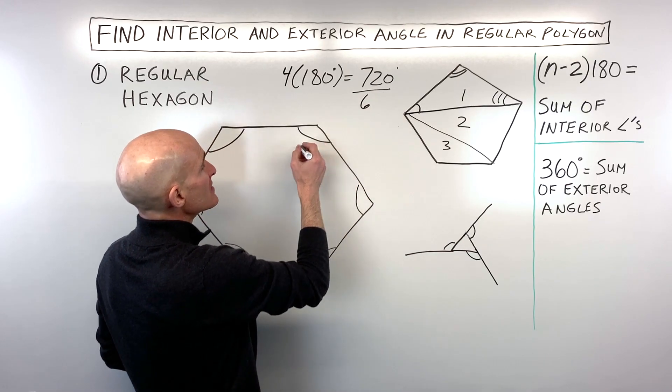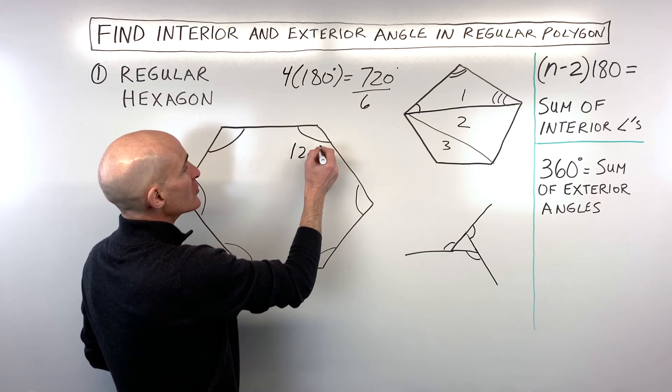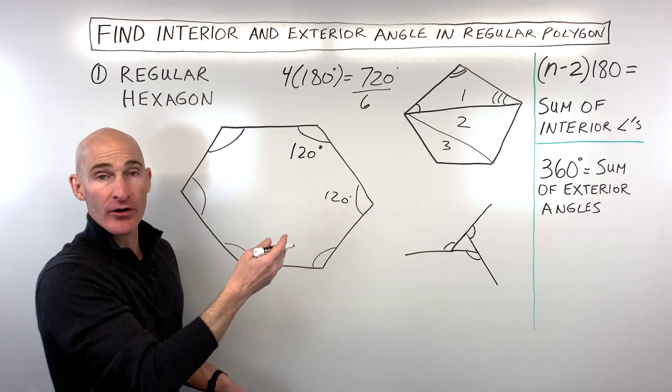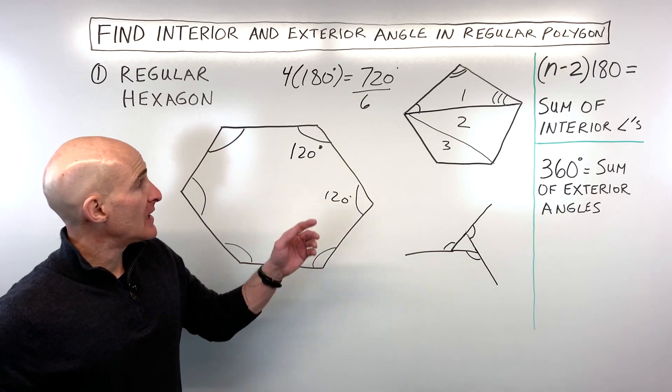But how many angles do we have? We have six angles. So if we were to divide this by six, you can see that each one of these angles would be 120 degrees—120, 120, et cetera. Now we've got the interior angle.